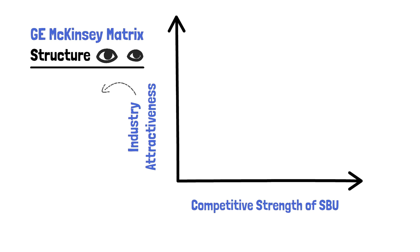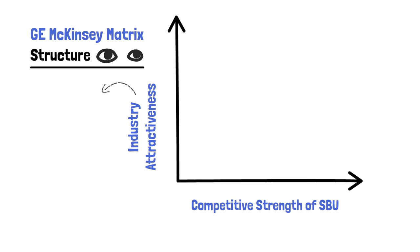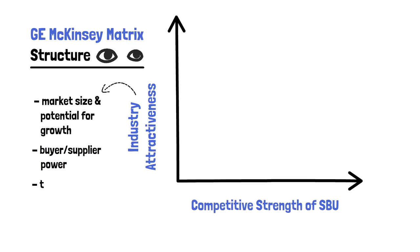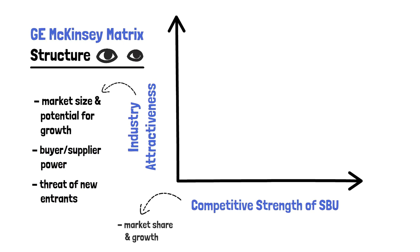For industry attractiveness, the determined factors can include market size and potential for growth, buyer or supplier power, or threat of new entrants. For competitive strengths, these factors include market share and growth, profit margins, manufacturing costs, customer base, or customer loyalty.